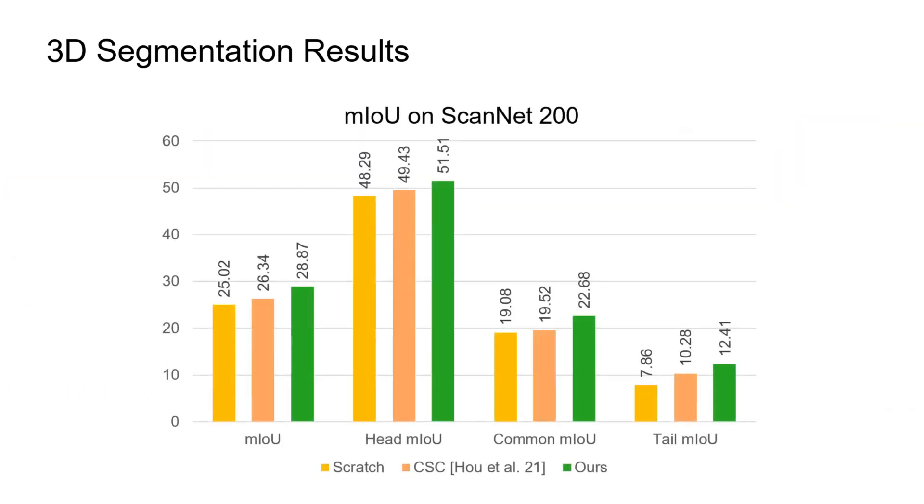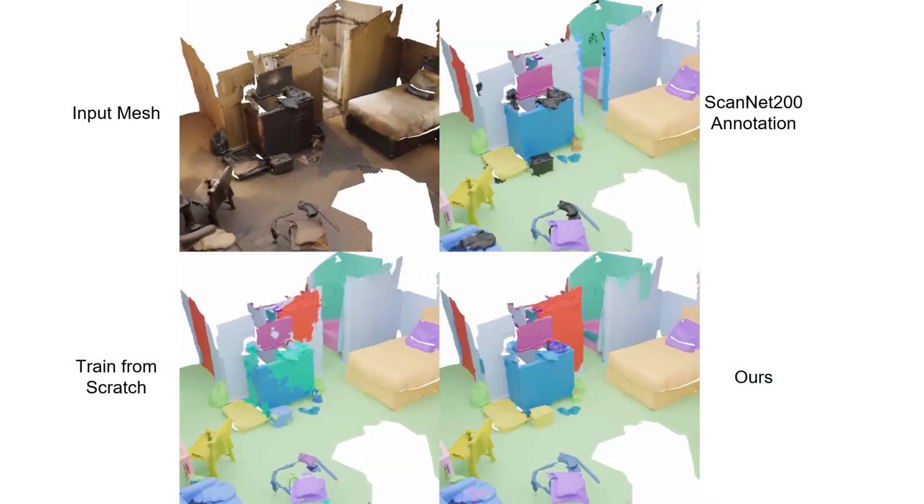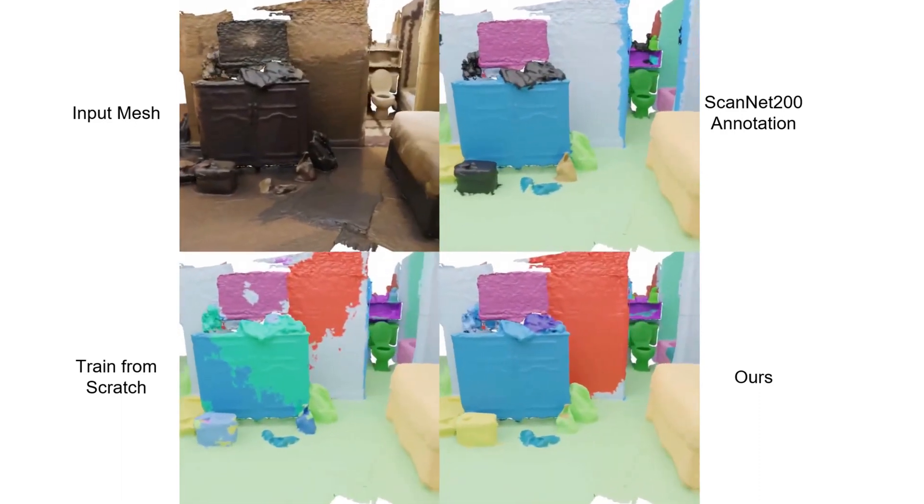Comparing our pre-training procedure to current state-of-the-art 3D pre-training method contrastive scene contexts, we are able to consistently improve performance over all splits. Qualitative comparisons highlight our improved segmentation performance overall, and in particular for rare categories and small objects.